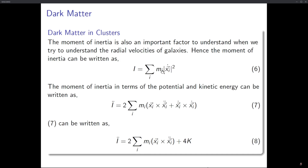In Newtonian mechanics, we can represent the moment of inertia in terms of kinetic and potential energy by taking its second derivative with respect to time: d²I/dt² equals 2 times the sum of m_i (x_i · x_i-double-dot plus x_i-dot · x_i-dot). When simplified, this gives 2 times the sum of m_i x_i · x_i-double-dot plus 4 times the kinetic energy.